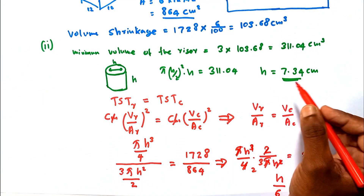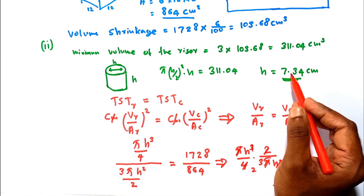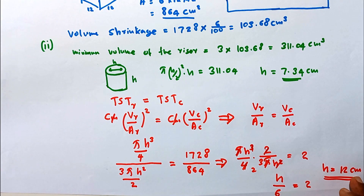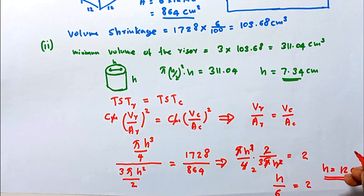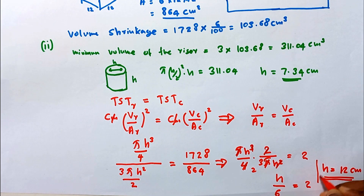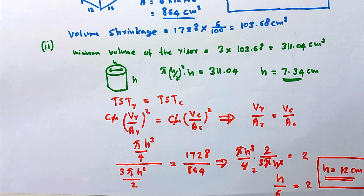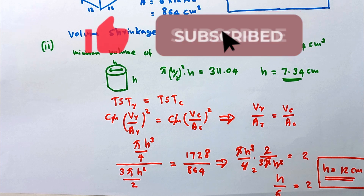According to the first consideration, we got h = 7.34 cm. According to the second consideration, we got h = 12 cm. From these two answers, we must take the maximum value. Therefore, the height and diameter of the riser should be 12 cm in order to satisfy both conditions. Thank you.